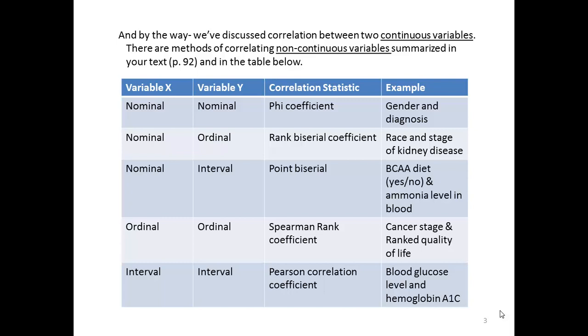Let's say we had two ordinal level variables we wanted to compare or see if there's a relationship between them. We would use Spearman's rank, such as cancer stage and ranked quality of life. Two interval levels, which is what we've been doing up to this point in this course, we use the Pearson's R, such as blood glucose levels and hemoglobin A1c.